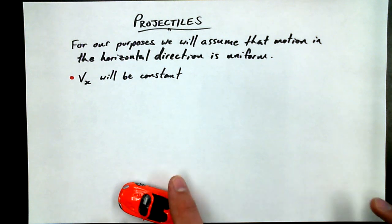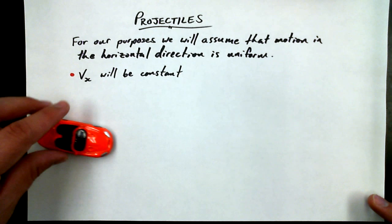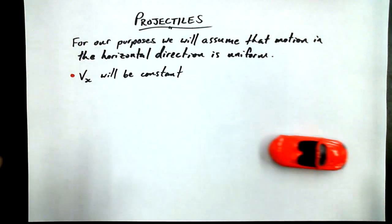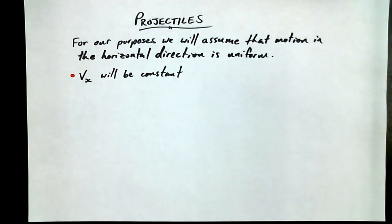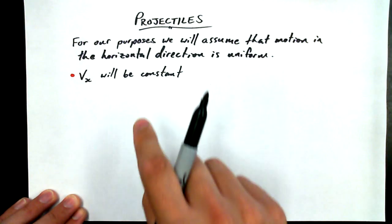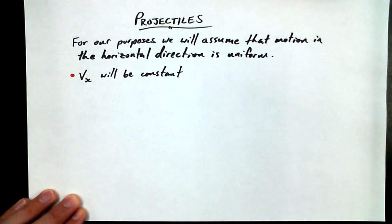So if we have a car and the car moves along at a constant pace, we say that it has uniform velocity. It has constant velocity in the x-direction. It's going to keep on rolling at a constant pace. We say that Vx is constant. And for our purposes, when we talk about projectiles, we're going to talk about the velocity being constant.